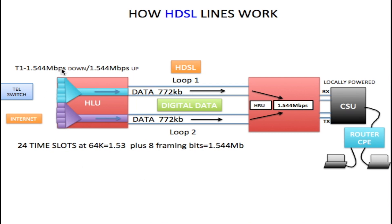An HDSL line, which is a T1 line, has 24 time slots and each time slot is 64 kilobits in size. You can attach a phone line to each one of these slots, since a phone line uses 64 kilobits of data. So if you want, you can have 24 phone lines attached to the entire T1 across all 24 slots. You have 24 slots at 64 Kbps each, which equals 1.536 megabits — which is short of 1.544 megabits per second.